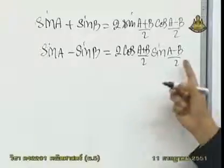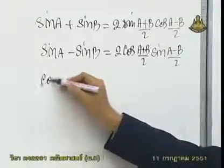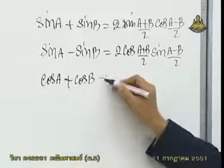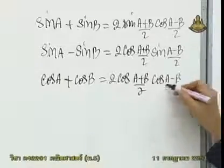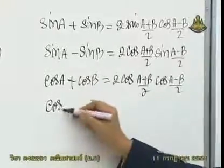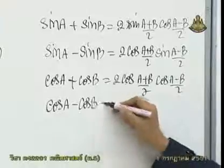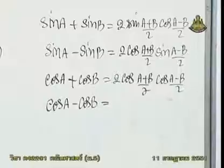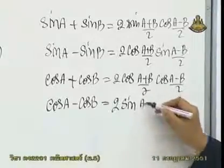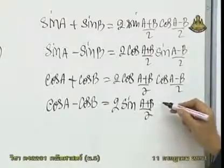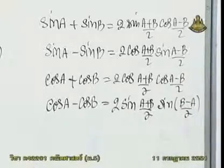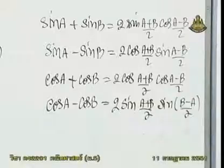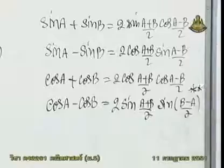cos a บวก cos b ก็เป็น 2 cos(half sum) แล้ว cos(half difference). ส่วน cos a ลบ cos b เนี่ย มันจะแปลกหน่อย เหมือนกับ 2 sin sin. ก็เป็น 2 sin(half sum) แล้วก็ sin(half difference). แต่ reverse คือ มุม b เดิม a-b จะกลายเป็น b-a นะครับ. อันนี้ต้องระวังไว้หน่อย ว่ามันต่างกับสูตรอื่นหน่อยหนึ่งนะครับ.